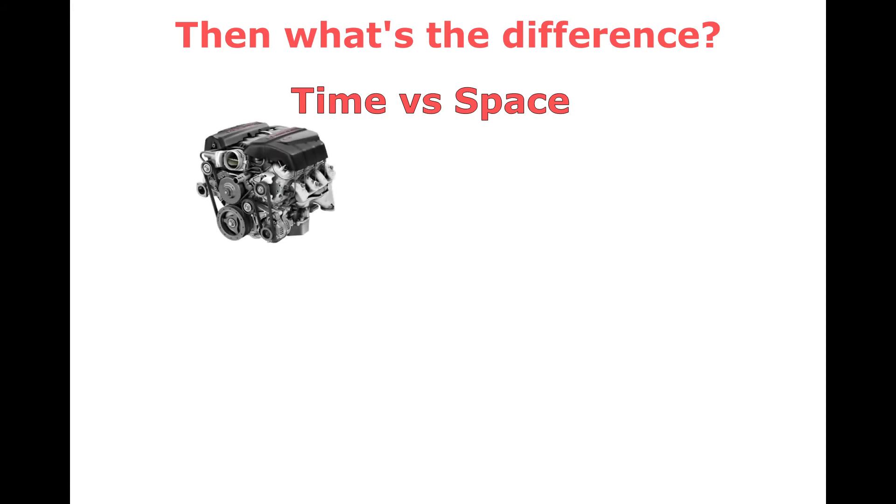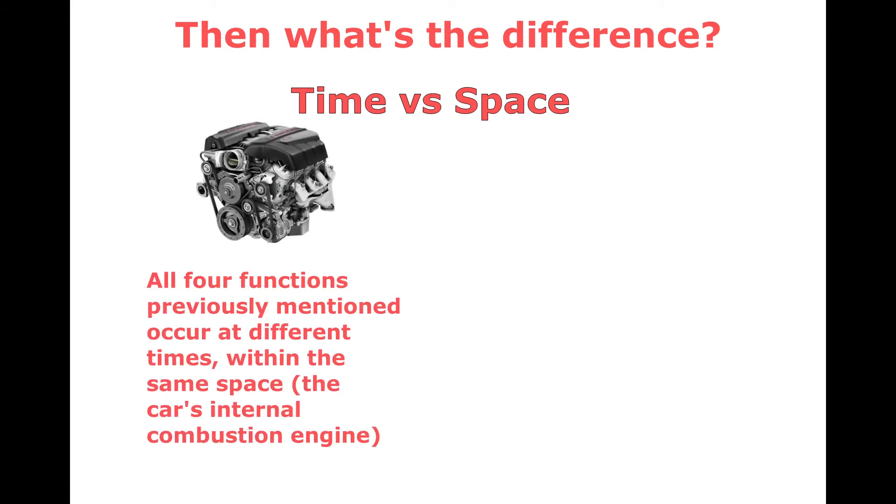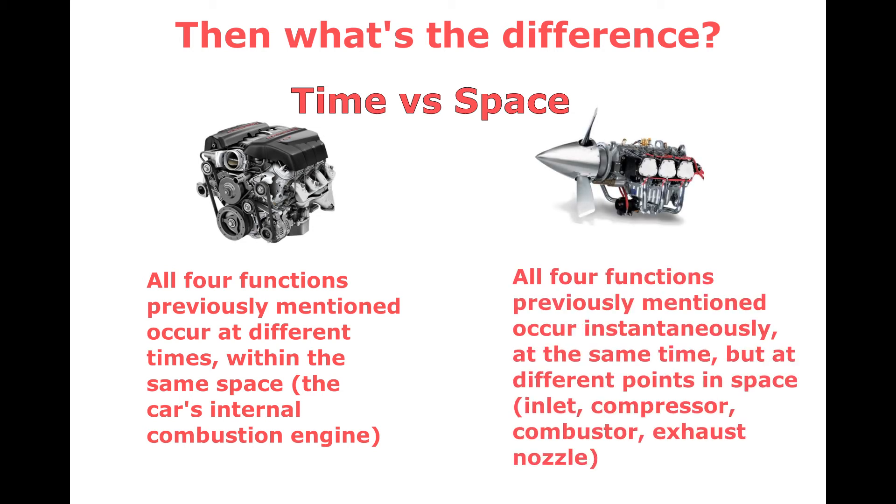The true difference between them lies in the time versus space at which each engine performs those above functions. In a car engine, all these steps occur in the same space, or within the piston driveshaft assembly discussed earlier, but at different points in time. In an aircraft engine, however, all of these steps occur at the same time, but at different points in space.